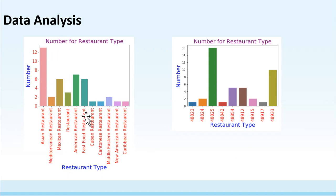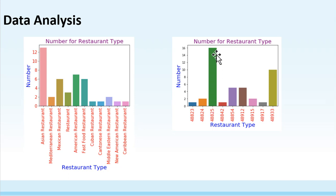This graph shows the number of each restaurant type. We can see that Asia restaurants have the most count, which means Asia restaurants are very popular in Lansing. This graph shows the restaurant count in each region — we can see that the most restaurants are located in the 48825 region. But since guests are the most important factor, next we need to consider the population in each region.